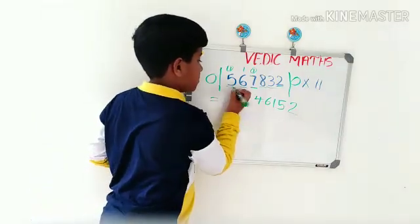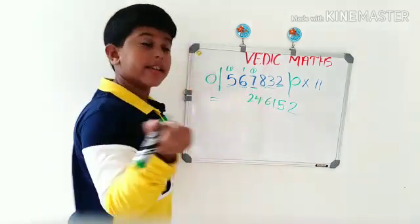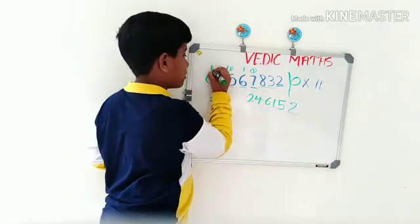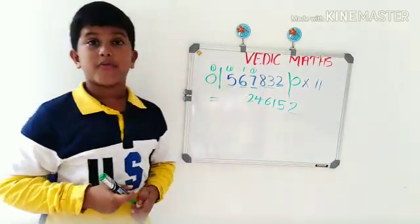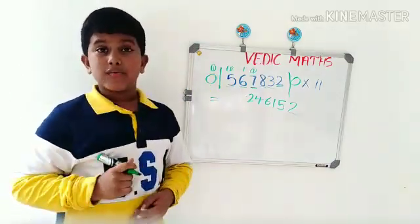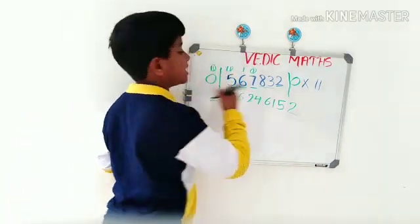Put the carry over to the next number. 0 plus 5 is 5, plus 1 is 6. Here's the answer.